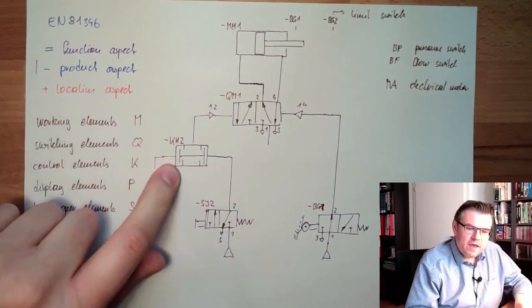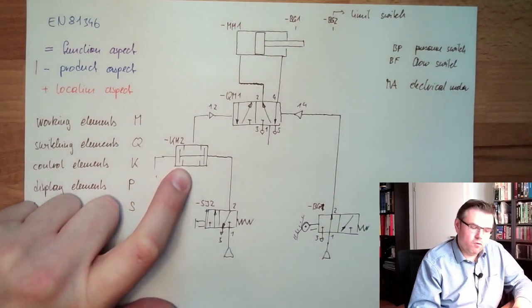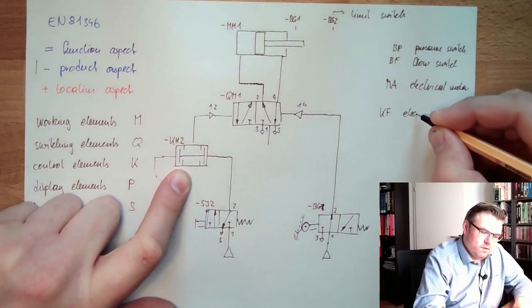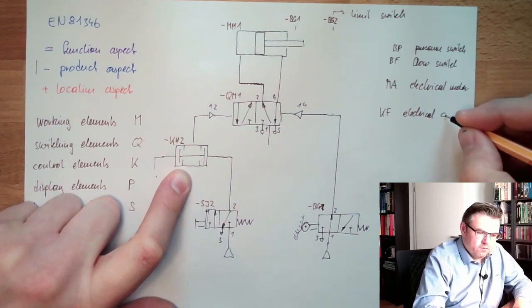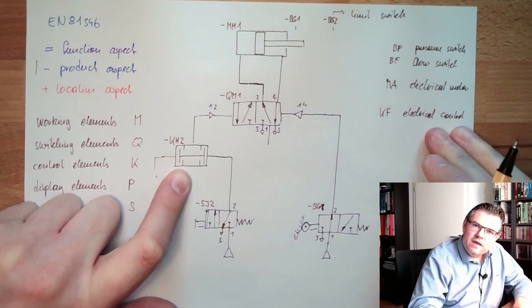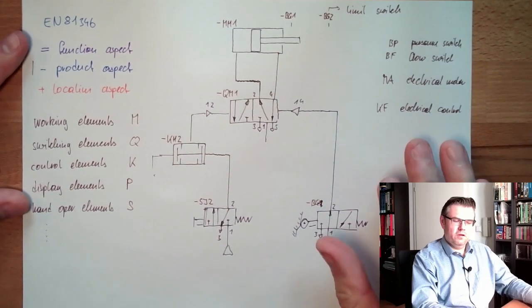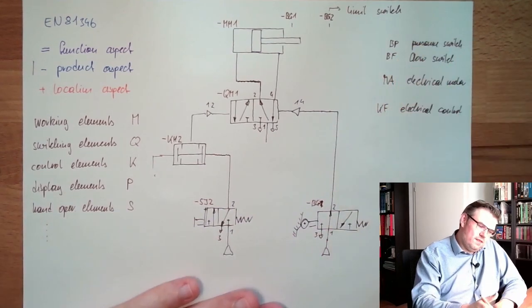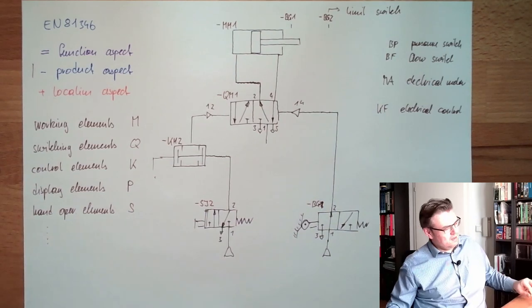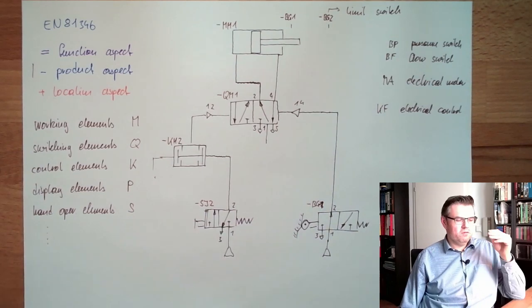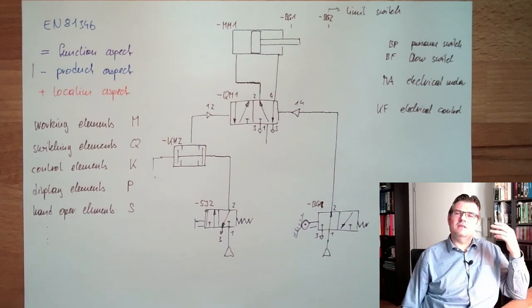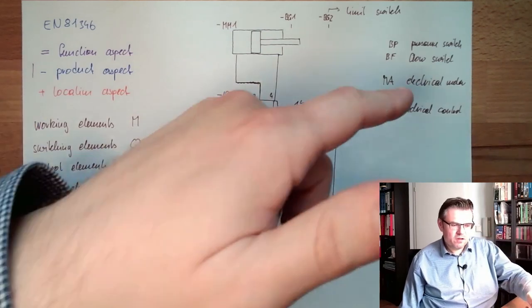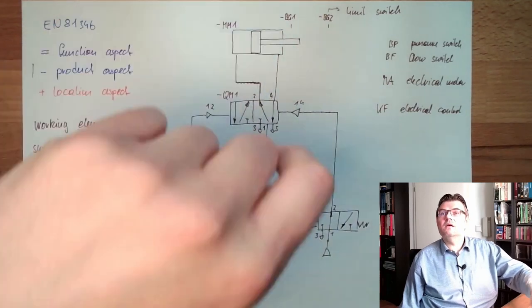Or here KH, flow control valve. KF, electrical control, a relay something like this. We will hear in a different set of videos about those things. So the second letters are somehow detailing. Is it a fluid technique, is it electrical technique? It's not just a working element, it's an electrical motor. It's not just a working element, it's a cylinder.